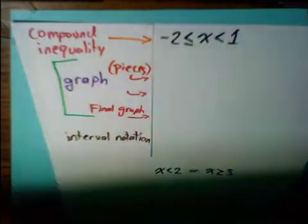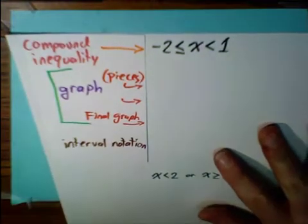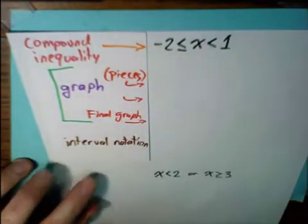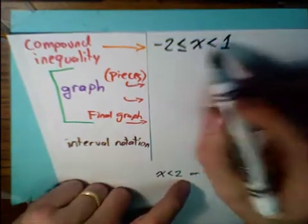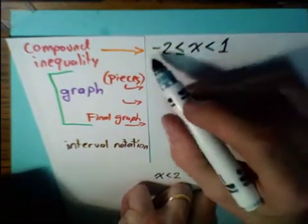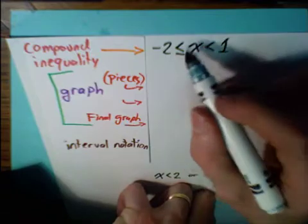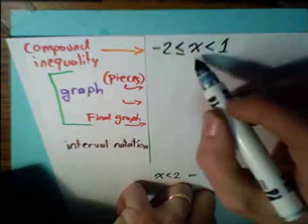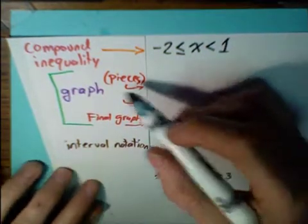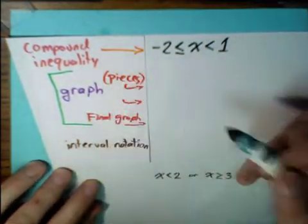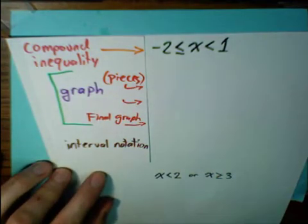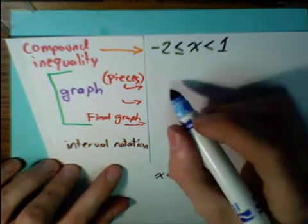Let's take a look at an example. In this case, we have a compound inequality where x is bounded by negative 2 and 1. We say negative 2 is less than or equal to x, which is less than 1. What we're going to do when we graph it is actually graph pieces of it — we're not going to graph it all at once.